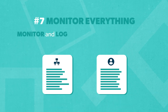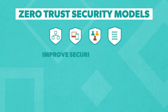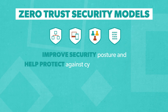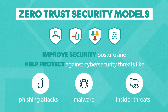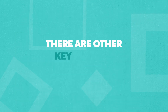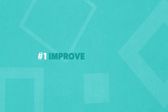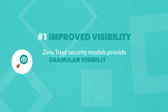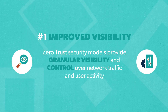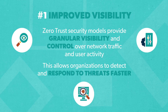As you can see, Zero Trust security models improve security posture and help protect against cybersecurity threats like phishing attacks, malware, and insider threats. There are other key benefits of Zero Trust as well. One: improved visibility. Zero Trust security models provide granular visibility and control over network traffic and user activity, allowing organizations to detect and respond to threats faster.